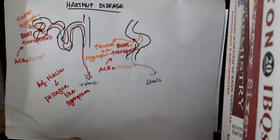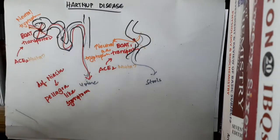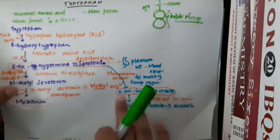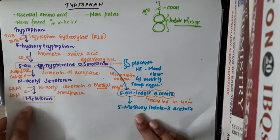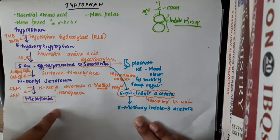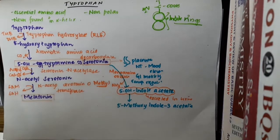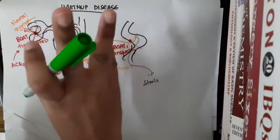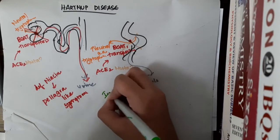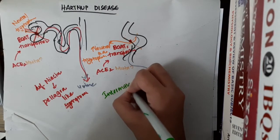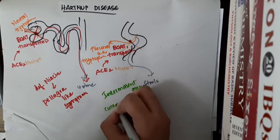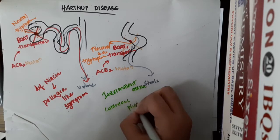Along with that, tryptophan is also important for the synthesis of serotonin and melatonin. Once tryptophan is deficient, there is deficiency of melatonin and serotonin as well. This will also cause other symptoms like intermittent ataxia and cutaneous photosensitivity.